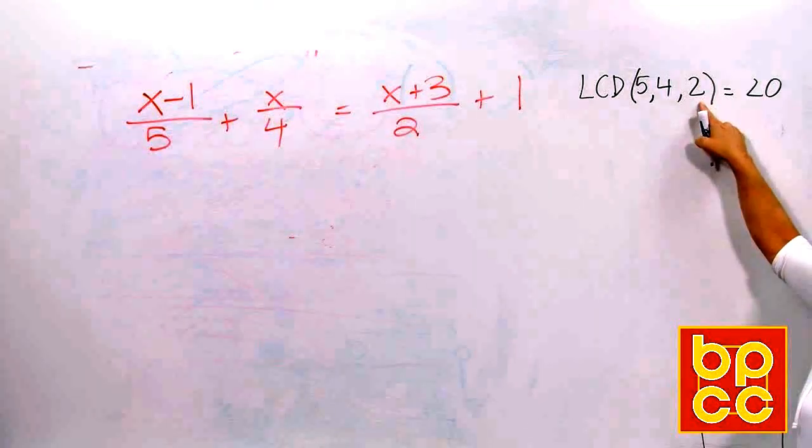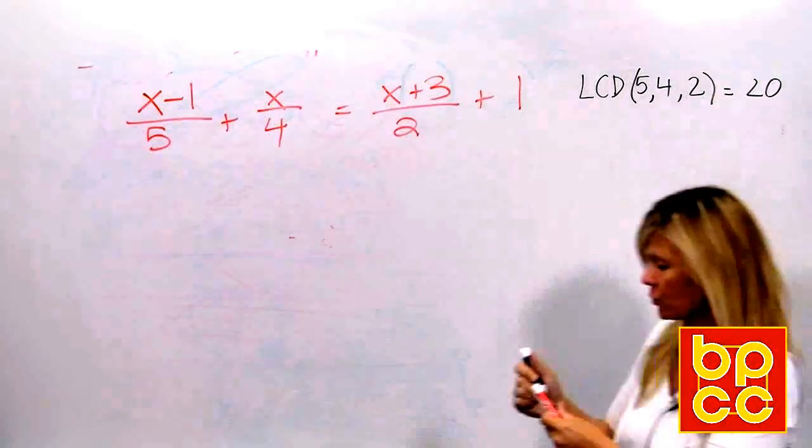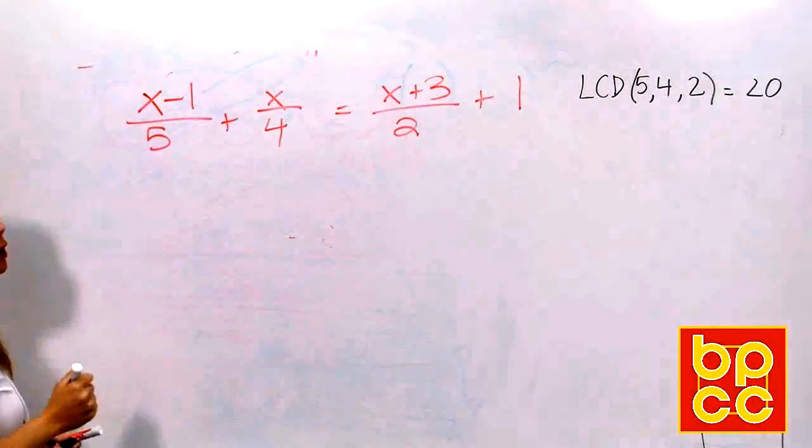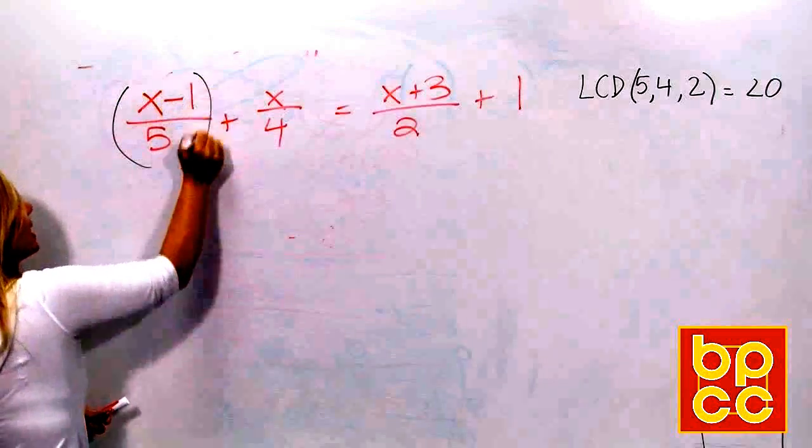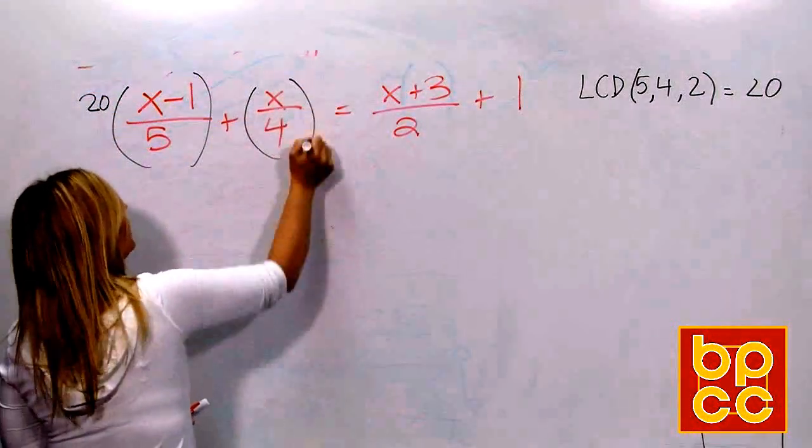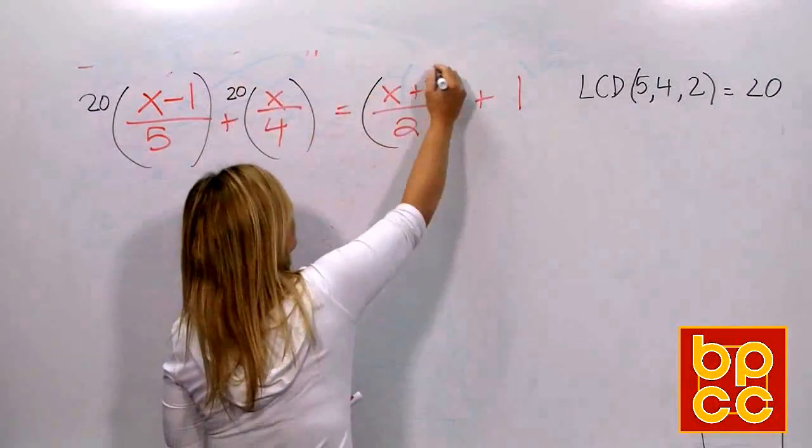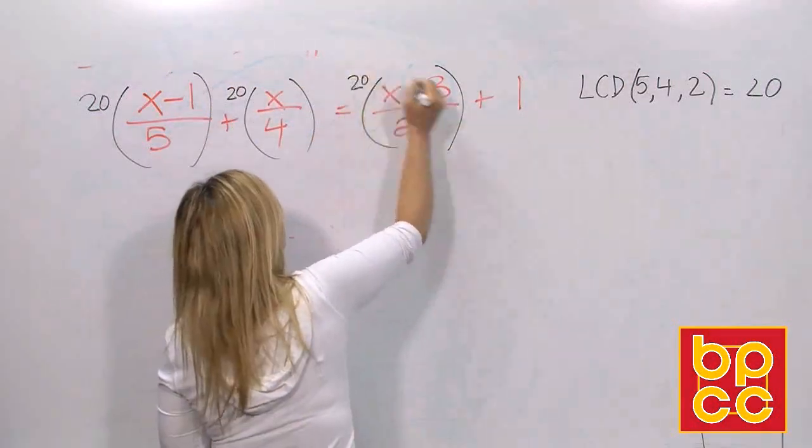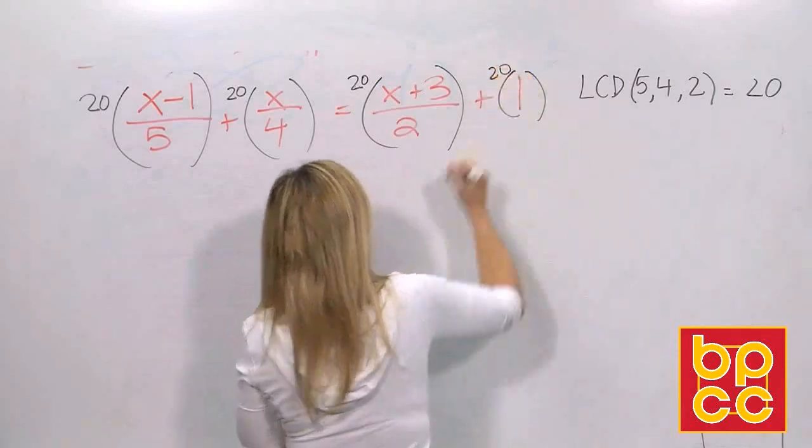5, 10, 15, 20. 4, 8, 12, 16, 20. 2, 4, 6, 8, 10, 12, 14, 16, 18, 20. That's what we're going to use. What are we going to do with the 20? We're going to put it in the numerator. We're going to connect it by parentheses, which is what operation? Multiplication. If we're trying to get rid of fractions, which are division, we must do the opposite, which is multiplication.